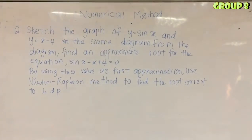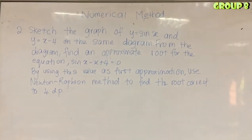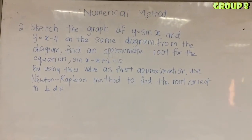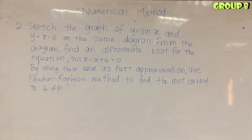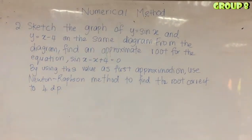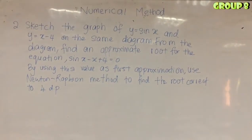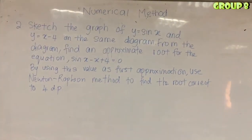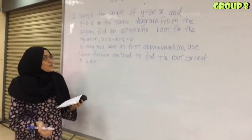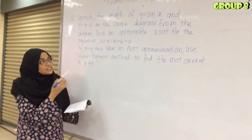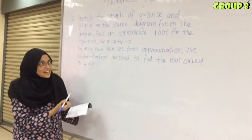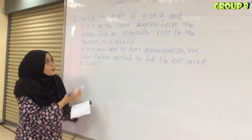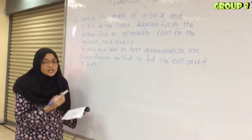Sketch the graph of y = sin x and y = x minus 4 on the same diagram. From the diagram, find an approximate root for the equation sin x minus x plus 4 = 0. Using this value as the first approximation, apply Newton-Raphson method to find the root correct to 4 decimal places. We are given two equations: y = sin x and y = x minus 4, which we need to sketch on the same diagram.